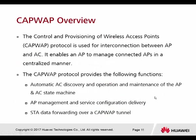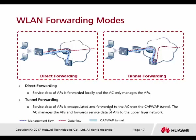CAPWAP protocol is used for the interconnection between AP and AC. It enables centralized management of connected APs. CAPWAP protocol provides the following functions: automatic AC discovery, operation and maintenance of the AP and AC state machine, AP management and service configuration delivery, and STA data forwarding through the CAPWAP tunnel. There are two different forwarding modes inside the AC: direct forwarding and tunnel forwarding.